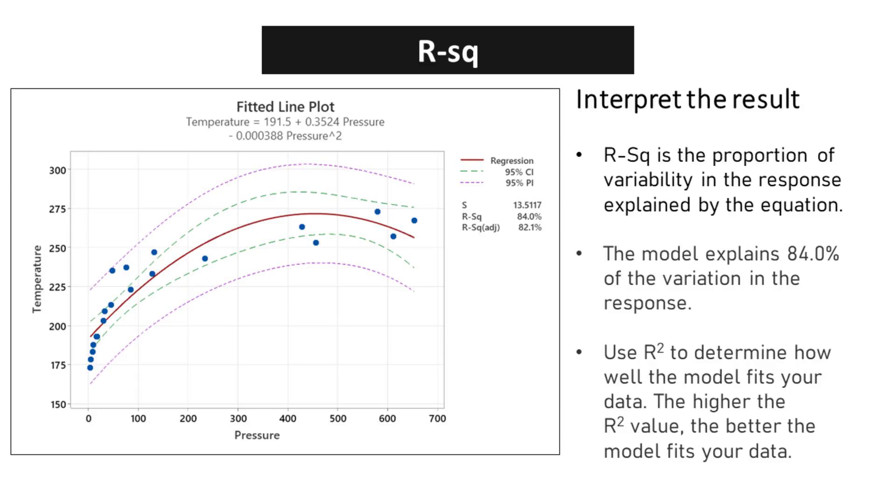When we analyze data and build statistical models, it is essential to assess the goodness of fit, and R-squared provides us with a valuable tool to do so. The higher the R-squared value, the better the model fits the data. This means that a high R-squared value indicates that the independent variables are doing a good job of explaining the variation in the dependent variable.